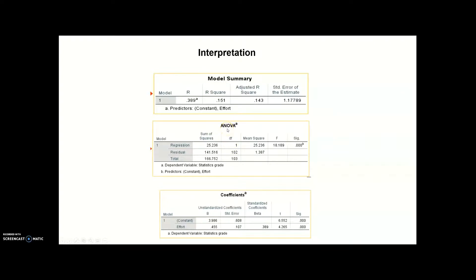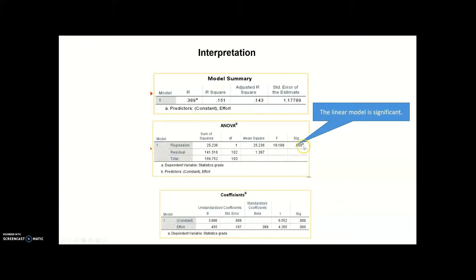Here are the outputs from SPSS. First, look at Table 2, which is the ANOVA table. When you conduct regression analysis, you should first look at the ANOVA table. In the ANOVA table, you can see the significance value (sig.), which is lower than my alpha level of 0.05. This means that my linear regression model is significant — my model works.